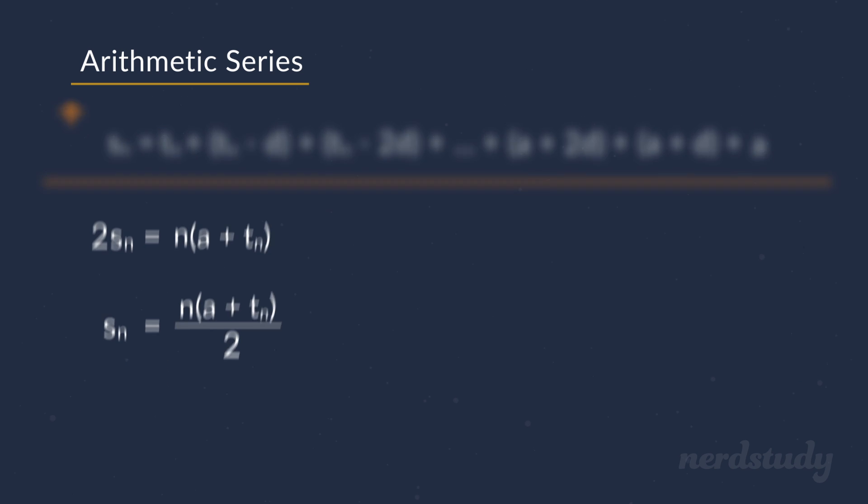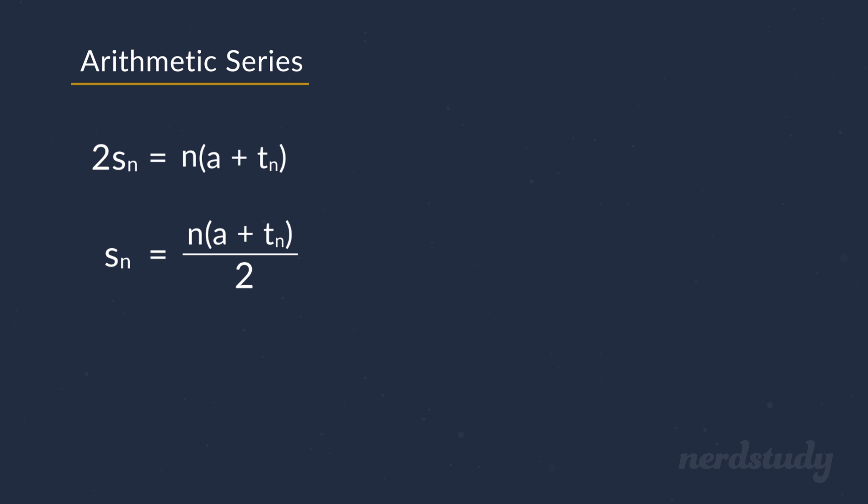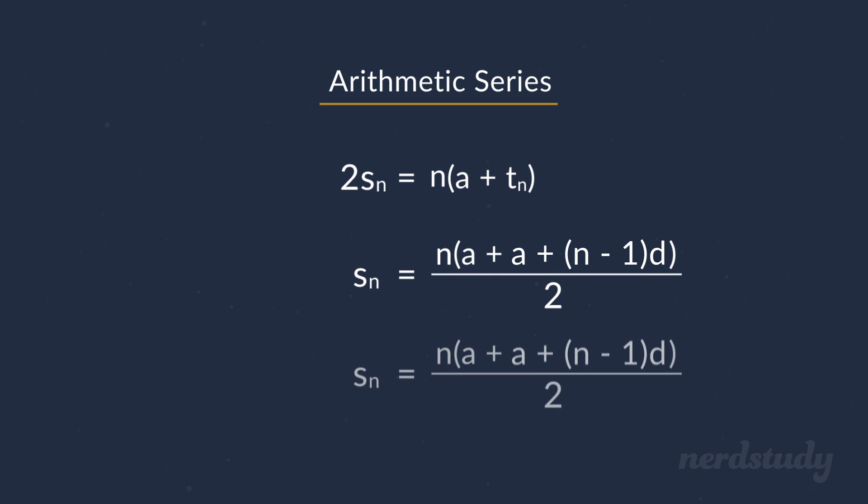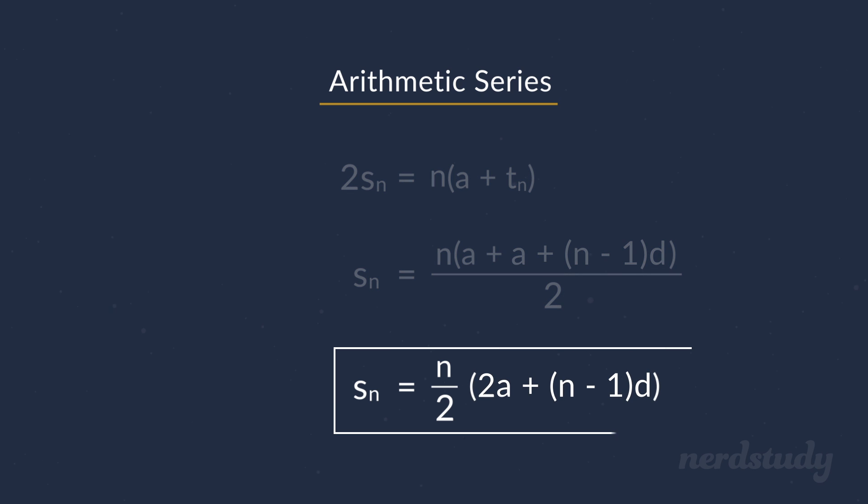Great! As a matter of fact, we can actually simplify this one step further. We already know what the equation for t_n is, since it's the same formula for arithmetic sequences. It's just a plus n minus 1 times d. So, we can just replace the t_n with that to get the following. Finally, we can actually simplify this down to become this. And that's our final formula for arithmetic series. Awesome!